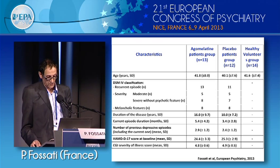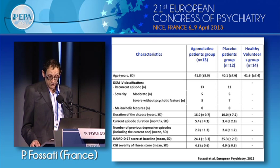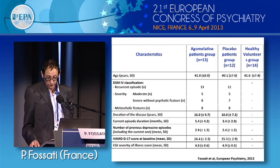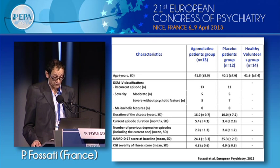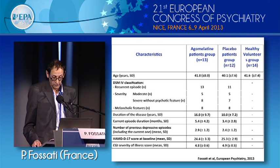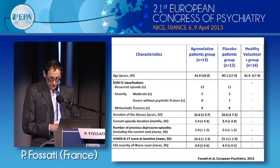We included 25 patients — 13 in the agomelatine group, 12 in the placebo group — and 14 healthy volunteers. These were truly depressed patients, some with recurrent depressions and some with melancholic features. The Hamilton score was more than 22 as expected, representing a really severe population.